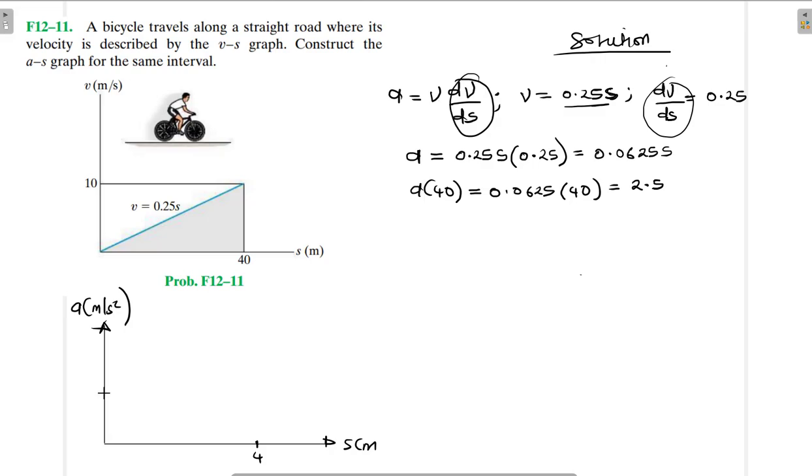So we get something like this here. The slope is lower in the acceleration. This is 2.5, and this is 40 here.